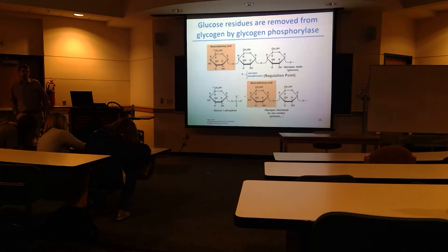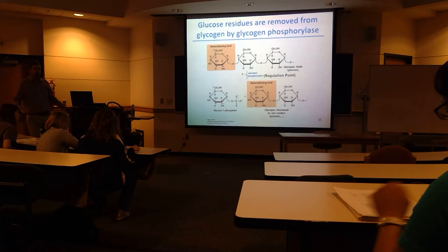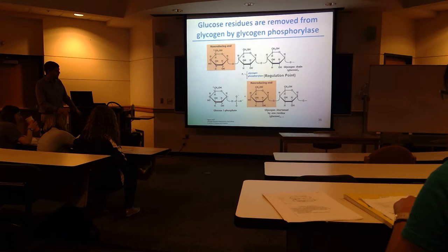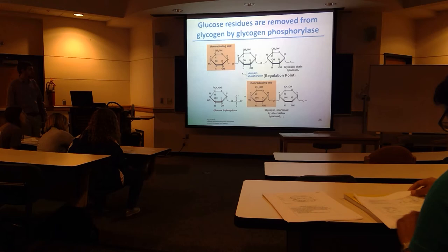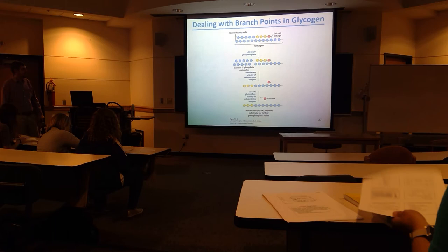This first step generates glucose-1-phosphate and shortened glycogen, all done by glycogen phosphorylase. In the diagram, glycogen phosphorylase acts at the non-reducing ends on the alpha-1,4 linkages, generating a bunch of glucose-1-phosphate molecules. When it gets close to one of the branch points, it needs the debranching enzyme.